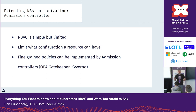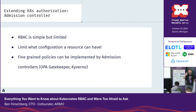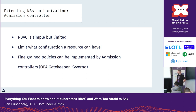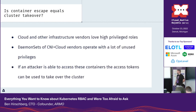It is really important in production systems to extend Kubernetes RBAC authorization and access control with a policy engine — an admission controller. So it is really important to extend Kubernetes RBAC authorization and access control with a policy engine like those.